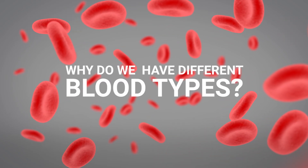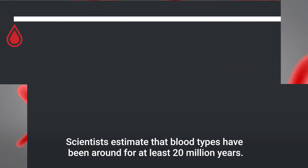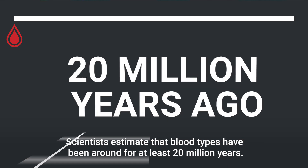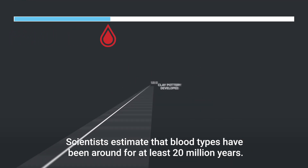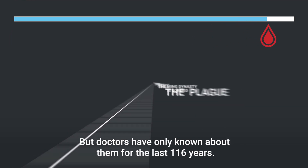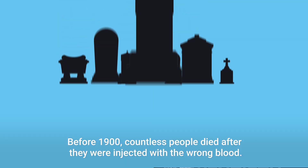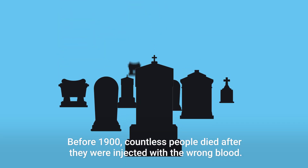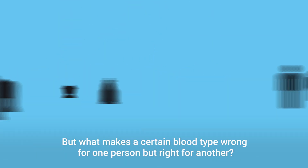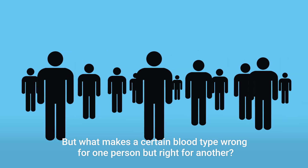Why do we have different blood types? Scientists estimate that blood types have been around for at least 20 million years, but doctors have only known about them for the last 116 years. Before 1900, countless people died after they were injected with the wrong blood. But what makes a certain blood type wrong for one person, but right for another?